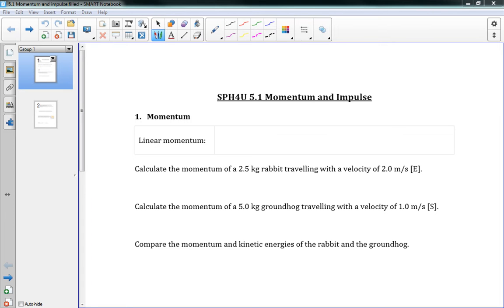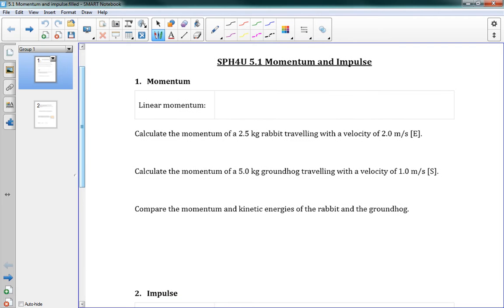Okay, hello everyone. This is 5.1 Momentum and Impulse. Momentum is a new concept, it's really cool, and it does a lot of really good stuff. Linear momentum is a measure of motion that is conserved in collisions. We use the letter lowercase p for this, and it's equal to mass times velocity. It has units of kilograms meter per second because it's mass times velocity. So it's a measure of motion that is conserved in collisions.